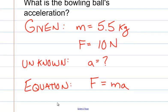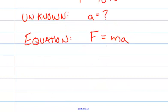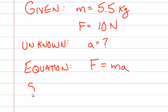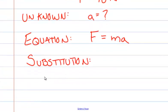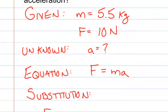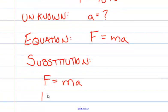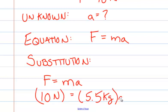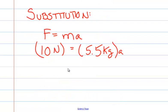Now we're going to substitute the information we have into our equation—substitution. I always like to rewrite the formula: F equals MA. Our force is 10 Newtons, our mass is 5.5 kilograms, and we don't know what our acceleration is.